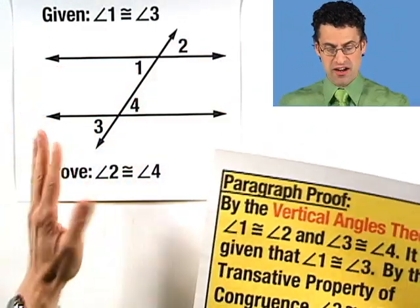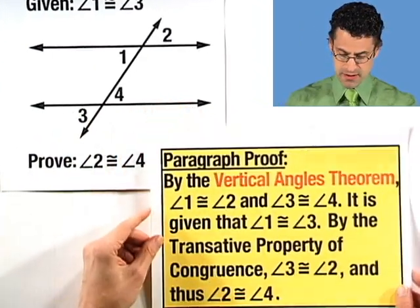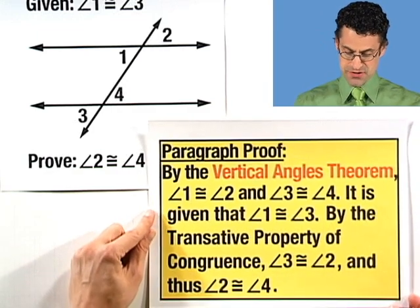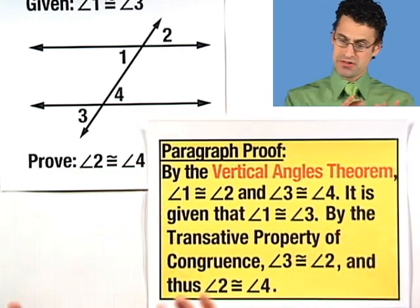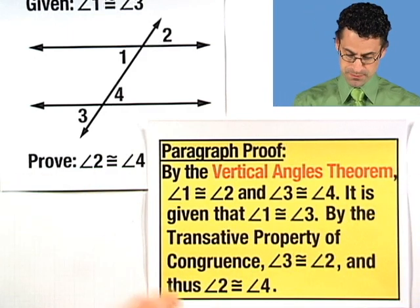And so here is a paragraph proof that someone else, it was not me, someone else created. Let's see what we think about it. So here's a paragraph proof. Notice what makes it a paragraph proof is there's no two columns, there's no statements and reasons, but it's all sort of combined into prose.